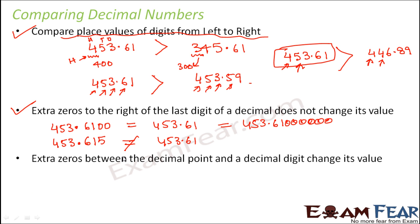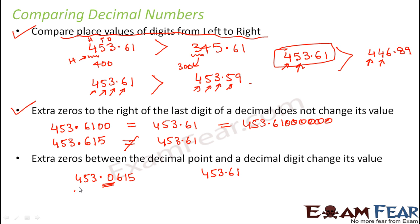Now let us look at the last rule: extra zeros between the decimal point and a decimal digit do change its value. The decimal point separates whole and decimal digits, and all digits to the right of the decimal point are referred to as decimal digits. So if you have a number like 453.0615, you cannot ignore the zero because it lies between the decimal point and the decimal digit.